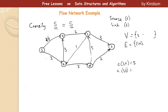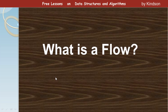In some textbooks you'll see each edge may have two numbers — for example, 2 and 3. The first number will always be smaller than or equal to the capacity, and the second number is the capacity. What is that first number? That takes us to the next tutorial, which covers what a flow is. Thank you for viewing and remember to click on subscribe.